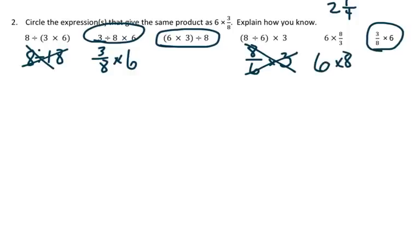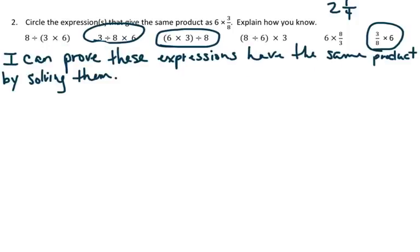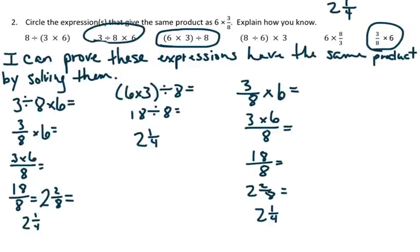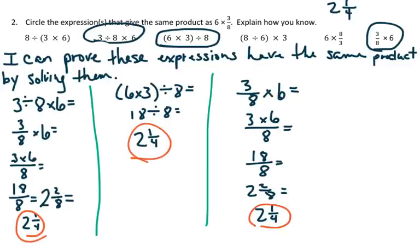So those other ones do not work, and my explanation is that I can prove these expressions have the same product by solving them. When I solve each of the expressions, I get 2 and 1/4 for each one of their answers.